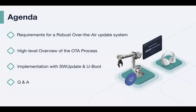Our agenda for today: we're going to talk about over-the-air update systems for embedded Linux systems. We'll start with a high-level overview of the requirements — what the OTA system needs to do. Then we'll draw a big picture of what our OTA process looks like and all the steps to update a system in the field. Once we have a good understanding of the big picture, we'll dive into the implementation in detail. We'll finish with some Q&A. Some of you have already sent questions when you enrolled — thank you — so I have a few slides for those.